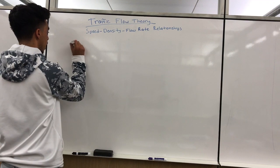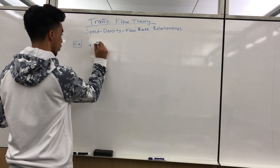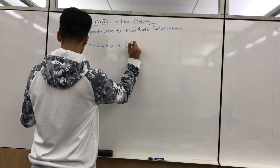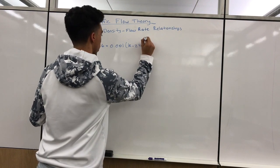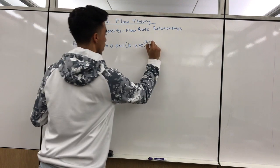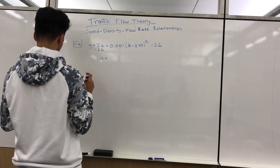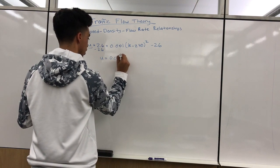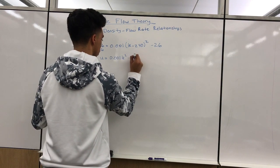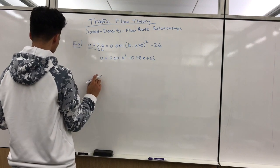In the example, we're given a speed-density relationship: u plus 2.6 equals 0.001 times (k minus 240) squared. Solving for u by subtracting 2.6 from both sides and simplifying, we get u equals 0.001k squared minus 0.48k plus 55.